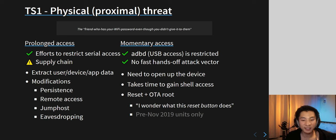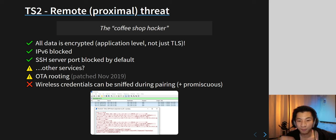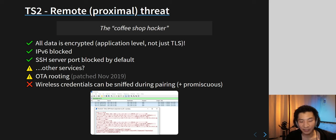With ADB, I demonstrated a proof of concept to execute arbitrary commands, but you first need the root password, which still requires pulling apart the device — so there's no fast path, which is actually a good thing. Devices pre-November 2019 are affected by the OTA rooting issue, but most people would be safe. For the 'coffee shop hacker' scenario — someone nearby snooping — the good news is all data is encrypted not just at TLS/SSL level but also with an additional RSA public encryption scheme inside each application. IPv6 is now blocked too, so no remote SSH.